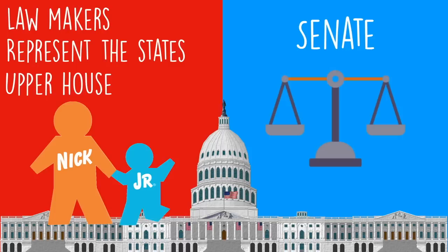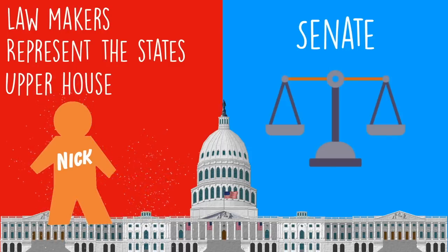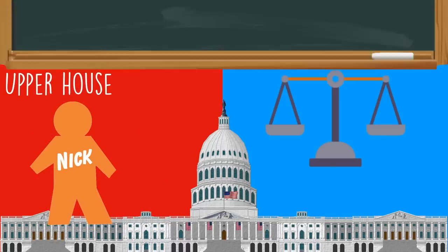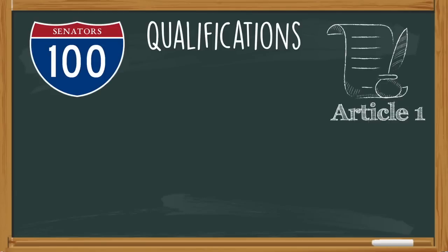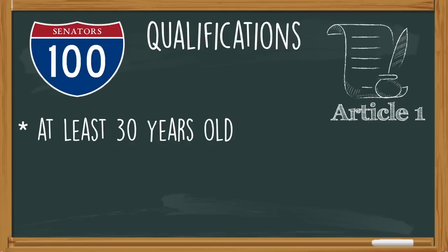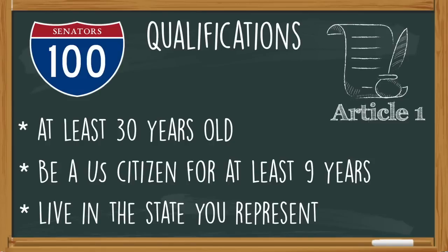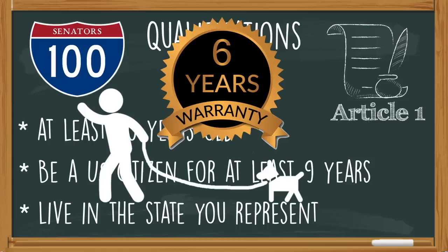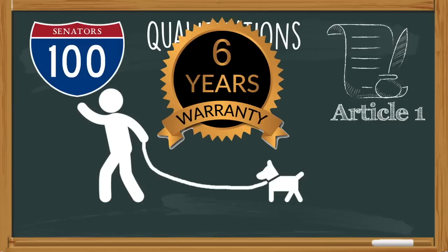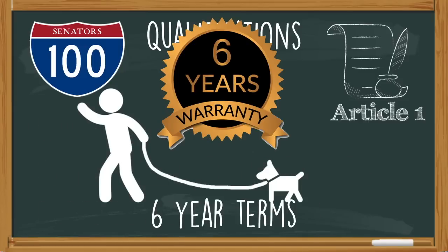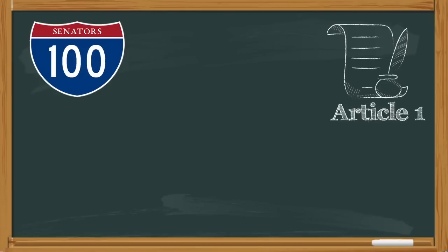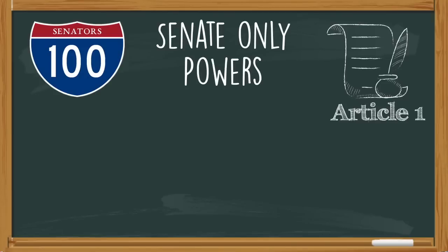The Senate is also considered to be the upper house, which means there are more qualifications and more responsibilities for this chamber of Congress. The first qualification is you have to be at least 30 years old, you have to be a U.S. citizen for at least nine years, and live in the state you represent. The qualifications to be a lawmaker in any of the chambers are still absurdly easy to meet. Meeting the qualifications for the upper house gives you more benefits — one of those is a six-year term — and you also have powers that lawmakers of the other chamber do not have.